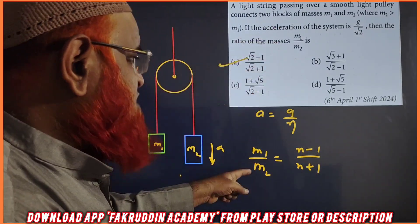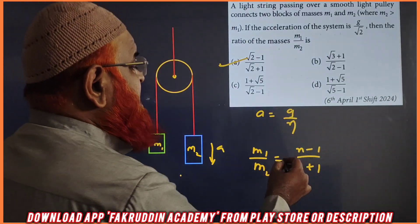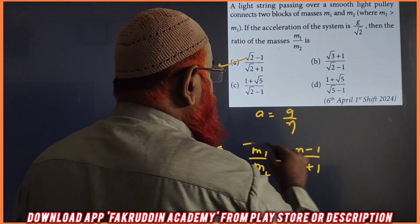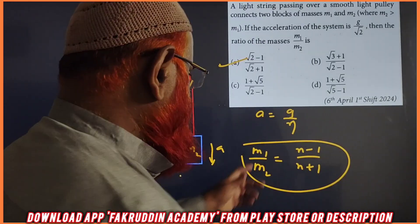You can see what is the shortcut. If you want to find out M1 by M2 without even solving, without pen and paper, you can write N-1 by N+1 is going to be a shortcut formula. How did you get this shortcut formula? Let me discuss now.